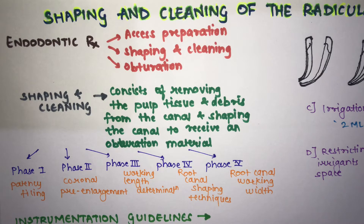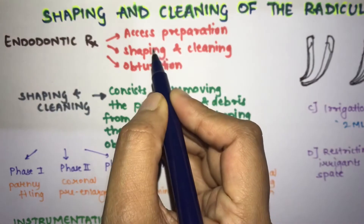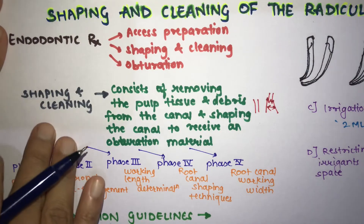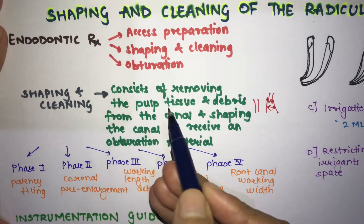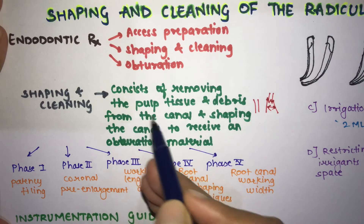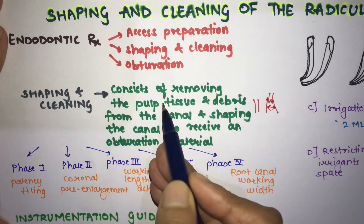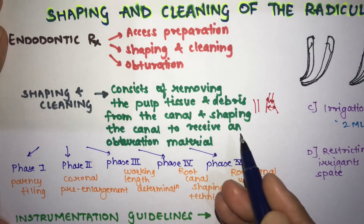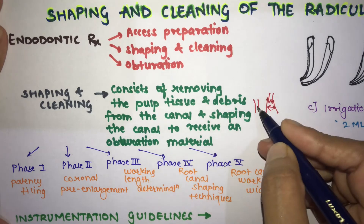The topic is instrumentation guidelines and the motions of instrumentation for the cleaning and shaping of the radicular space. Endodontic treatment has three main steps: access opening, shaping and cleaning, and obturation. Cleaning and shaping consists of removing the pulp tissue and debris from the canal, and shaping the canal to receive an obturation material.